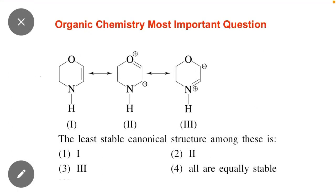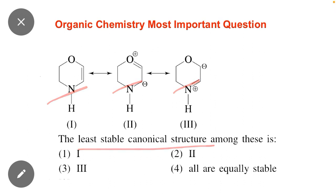Welcome to Chemistry Academy. In this video, we will study the most important questions of organic chemistry. Here you can see that three canonical structures are given, and the question is: which is the least stable canonical structure? Keep in mind that in a stable canonical structure, the more electronegative atom should carry a negative charge.